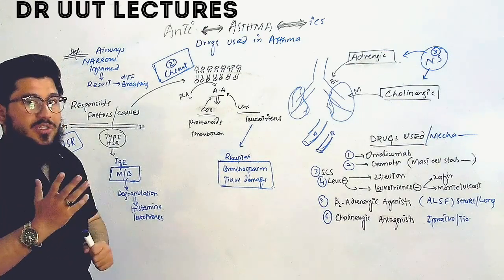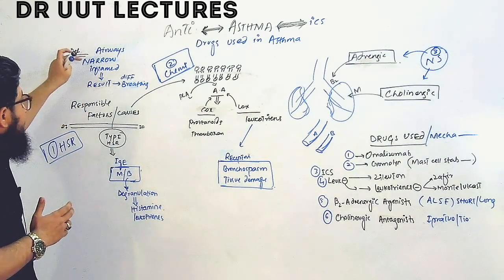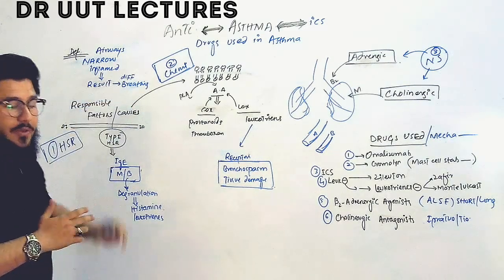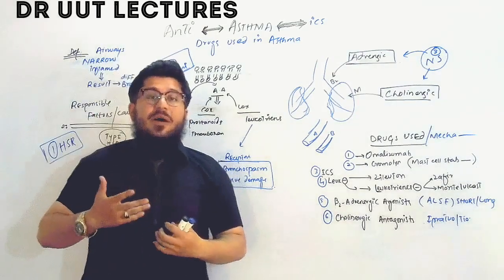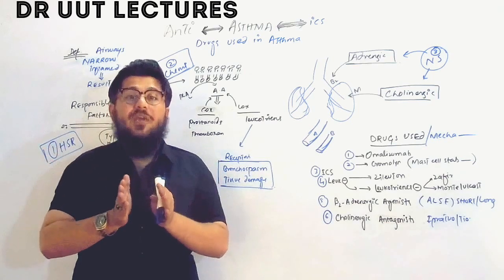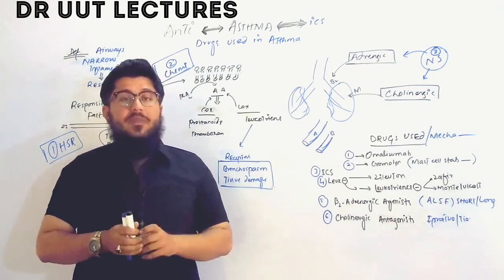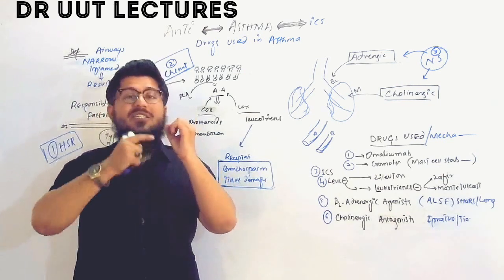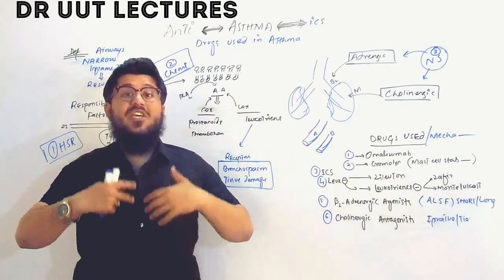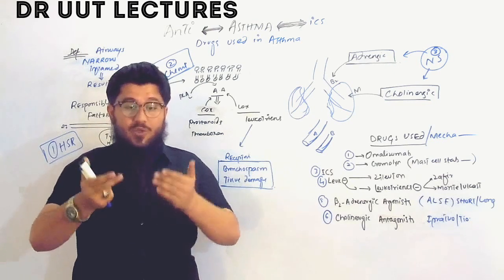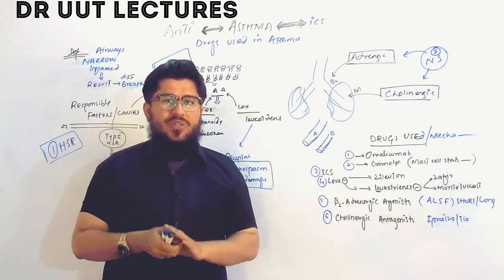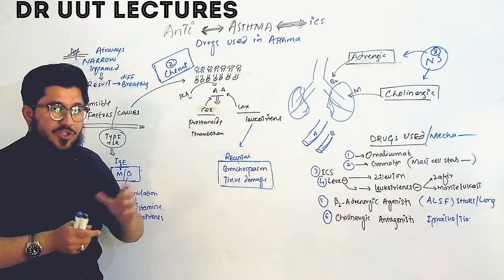The first point is the definition. Asthma is a disease in which the airways narrow or become inflamed, resulting in difficulty breathing. When our airways become narrow, it is difficult for air to pass through — difficult to inhale or exhale. This condition of difficult breathing is known as asthma.